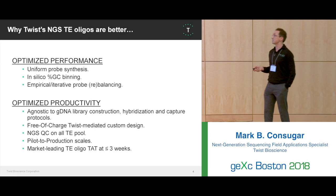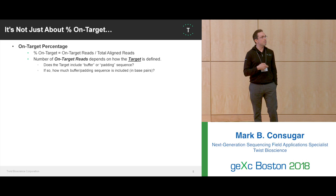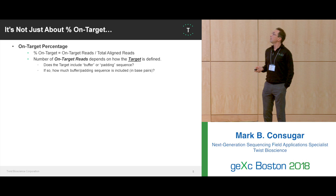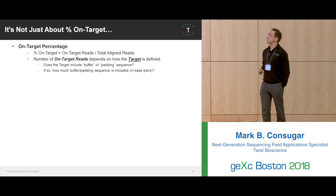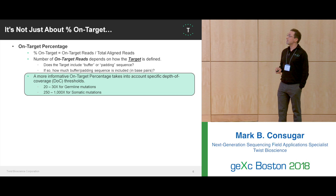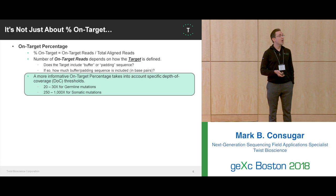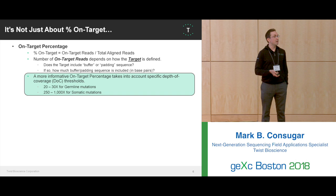As I get into NGS target enrichment, people like to identify metrics that qualify a good capture, and most migrate to percent on target. Percent on target is defined as on-target reads over total aligned reads after duplicates are removed. However, a better way to represent it is: what is your target coverage at a specific depth? Everyone has a critical threshold needed to make accurate variant calls. For germline mutations you're looking at 20 to 30x, and for somatic mutations you can be anywhere up to 1,000x.